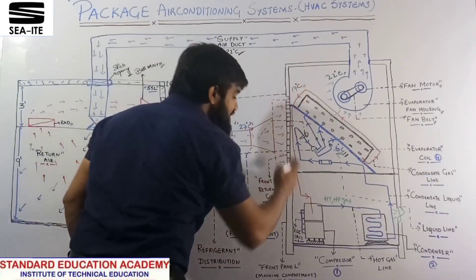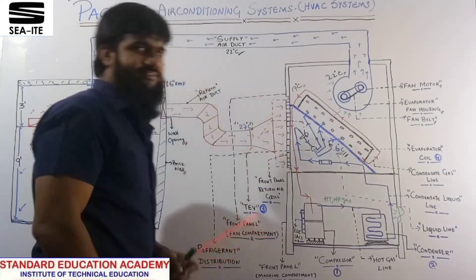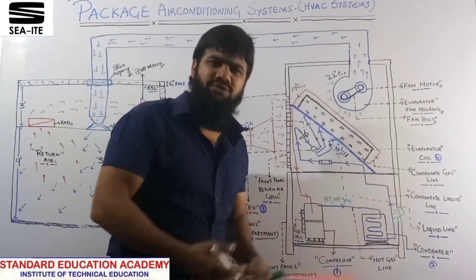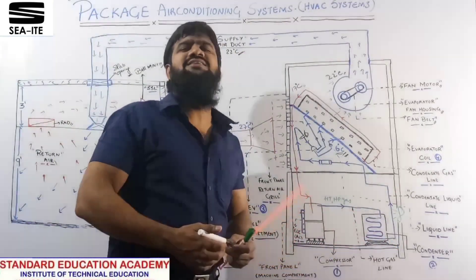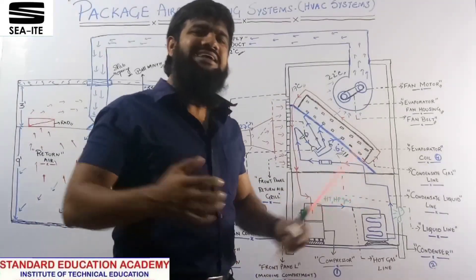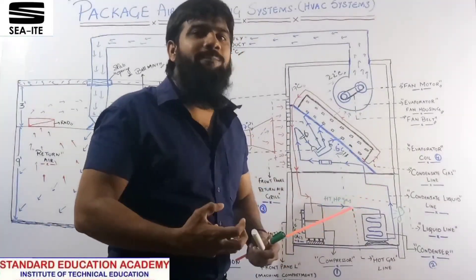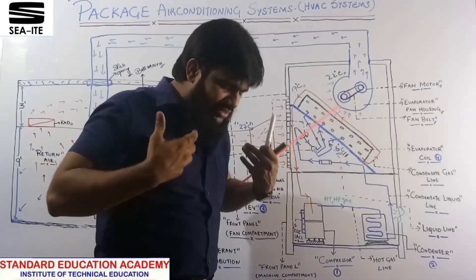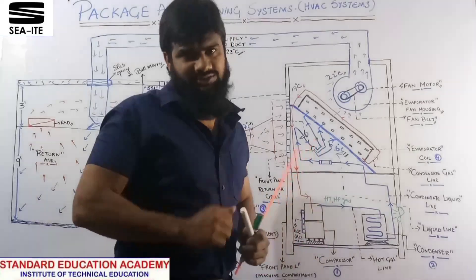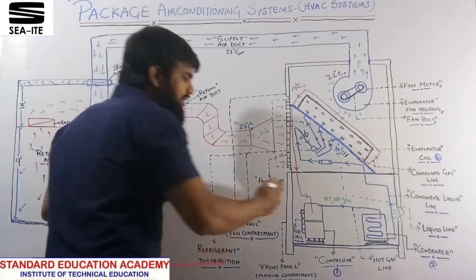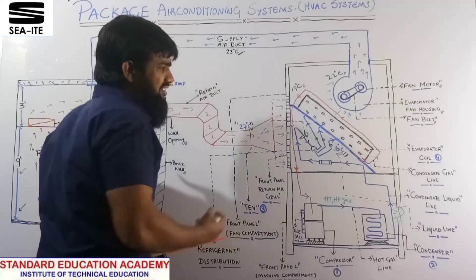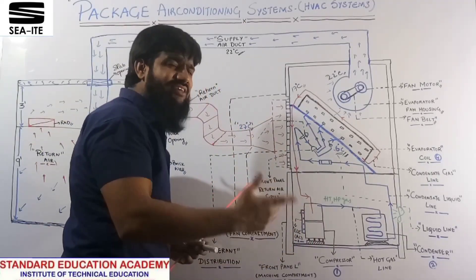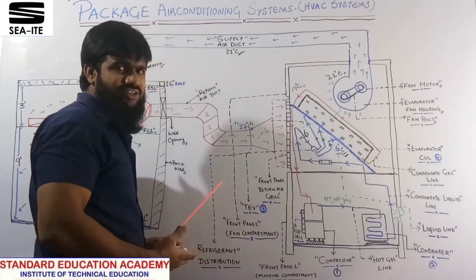This condensate gas goes to the compressor. The compressor does three things — the compressor is the heart of your HVAC system. Just as the heart sucks blood, compresses it, and discharges it to distribute throughout the body organs, the compressor sucks the refrigerant condensate gas, compresses that gas, and discharges it. The purpose of compression is to increase the pressure of the refrigerant.